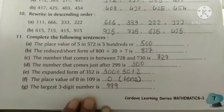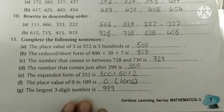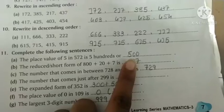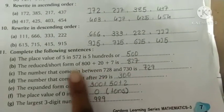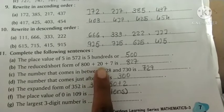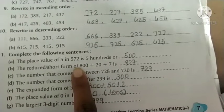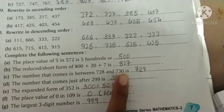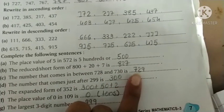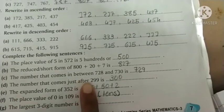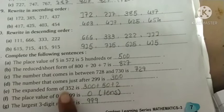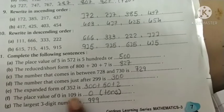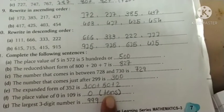Question 11, fill in the blanks. The place value of 5 in 572 is 500. The reduced short form of 800 plus 20 plus 7 is 827. The number that comes between 728 and 730 is 729. The number that comes just after 299 is 300. The expanded form of 352 is 300 plus 50 plus 2. The place value of 0 in 109 is 0.